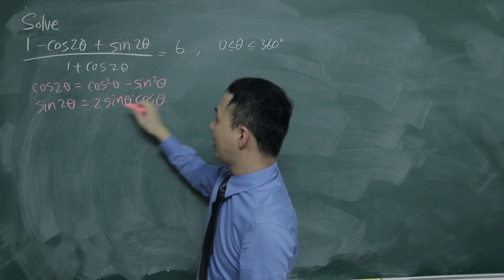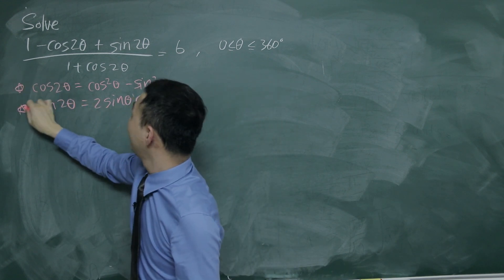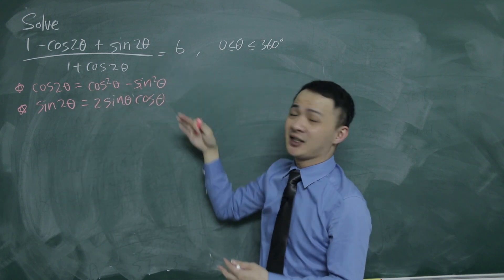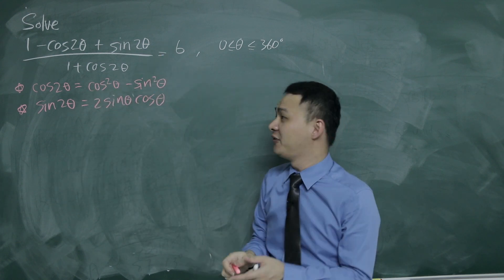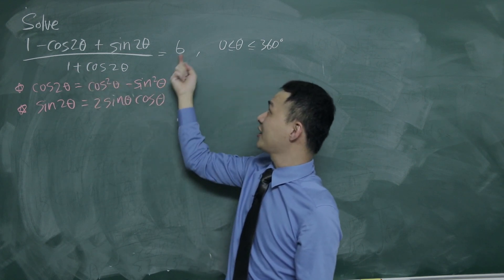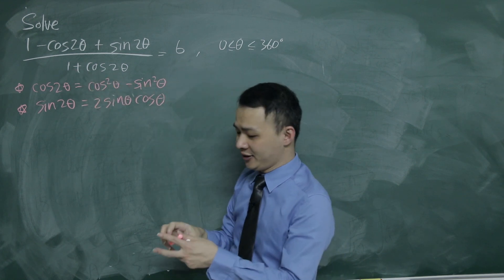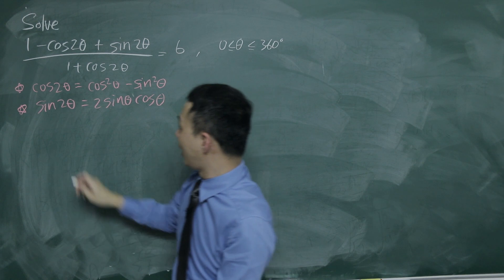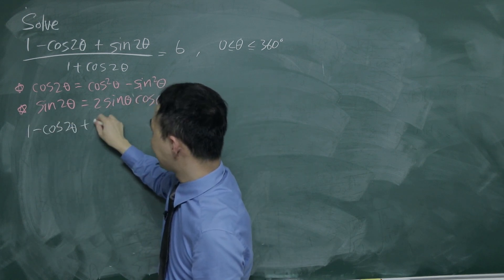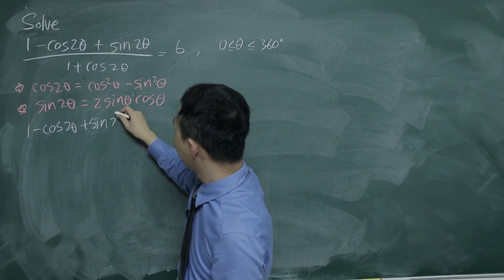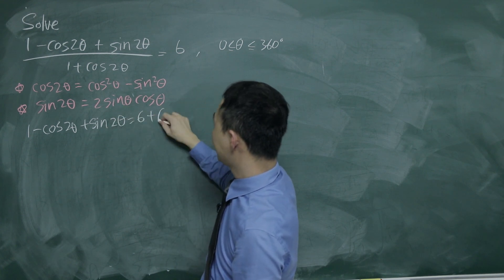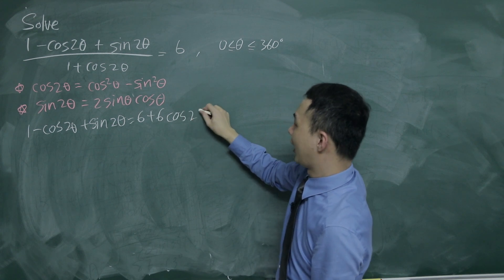I'm going to use these two formulas later. But before I apply them, I'll simplify first. The first thing I'll do is move the (1 plus cos 2θ) to the other side by multiplying. So I'll have: 1 minus cos 2θ plus sin 2θ equals 6 plus 6 cos 2θ.